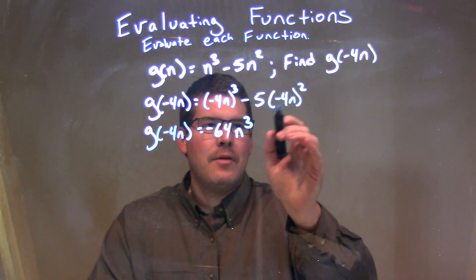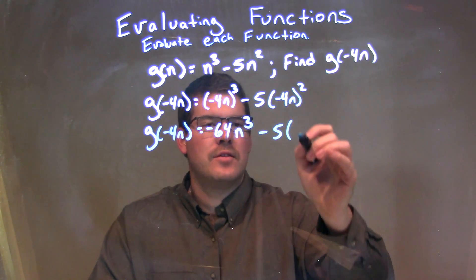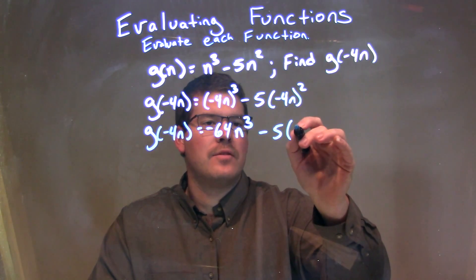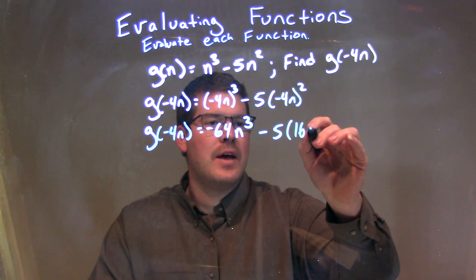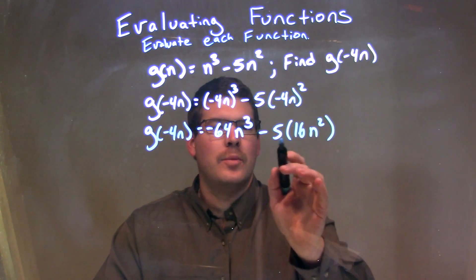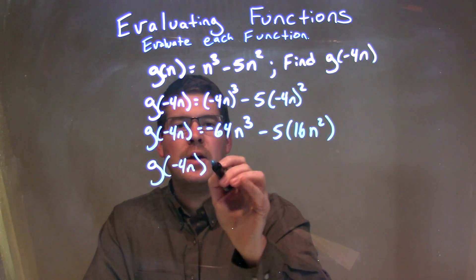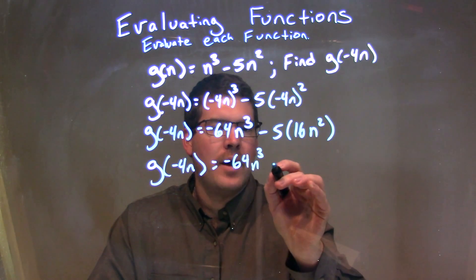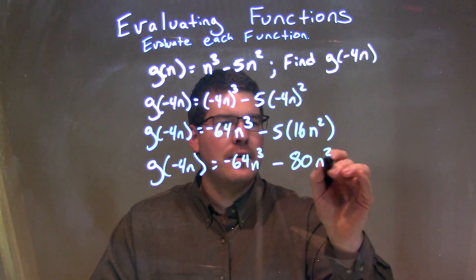Now we have subtracting by 5 times negative 4n to the second power. Negative 4 times negative 4 is a positive 16, and we have n squared. So now we need to simplify a little bit more — we can distribute that 5. We bring down the negative 64n to the third power, and then we have minus, and 5 times 16 is 80, so we have 80n squared.